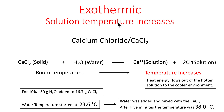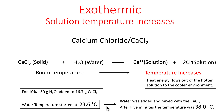For our exothermic process, where the solution temperature increases, we used calcium chloride. It's solid calcium chloride; we added distilled water to it. Calcium ionizes to its divalent form: Ca²⁺ plus two Cl⁻ ions. The temperature increases. In this case, heat energy flows out of the hotter solution to the cooler environment. Similar to the sodium chloride setup, we used 10%: 150 grams of distilled water with 16.7 grams of calcium chloride. Water started at 23.6°C, and after five minutes the temperature was 38°C — significantly exothermic.